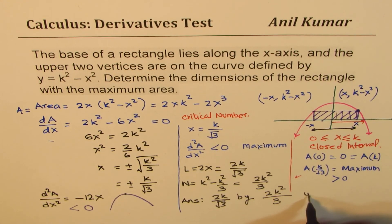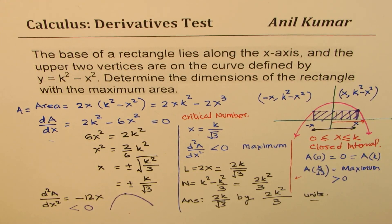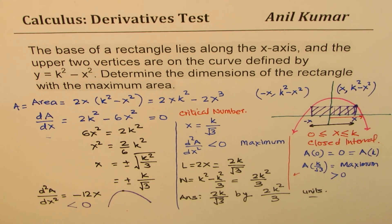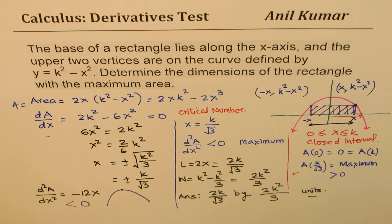So that becomes the dimensions of the rectangle, giving the maximum area where the two vertices are on the parabola, k square minus x square. So I hope the concept is clear to you. Feel free to write your comments, share your views. And if you like and subscribe, that'll be great. Go through this playlist where I've taken up about 10 questions, which will help you in your test on derivatives. Thanks and all the best.